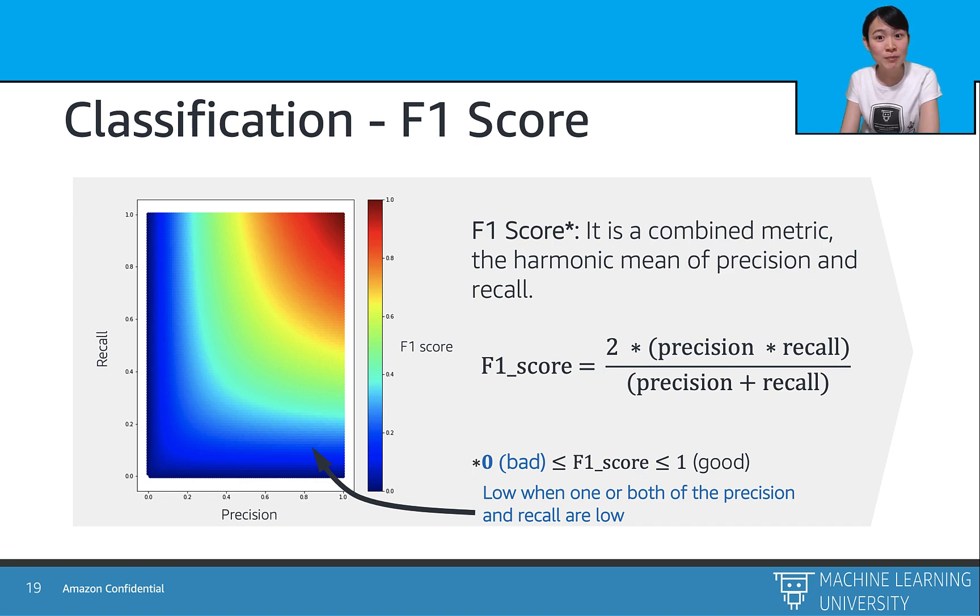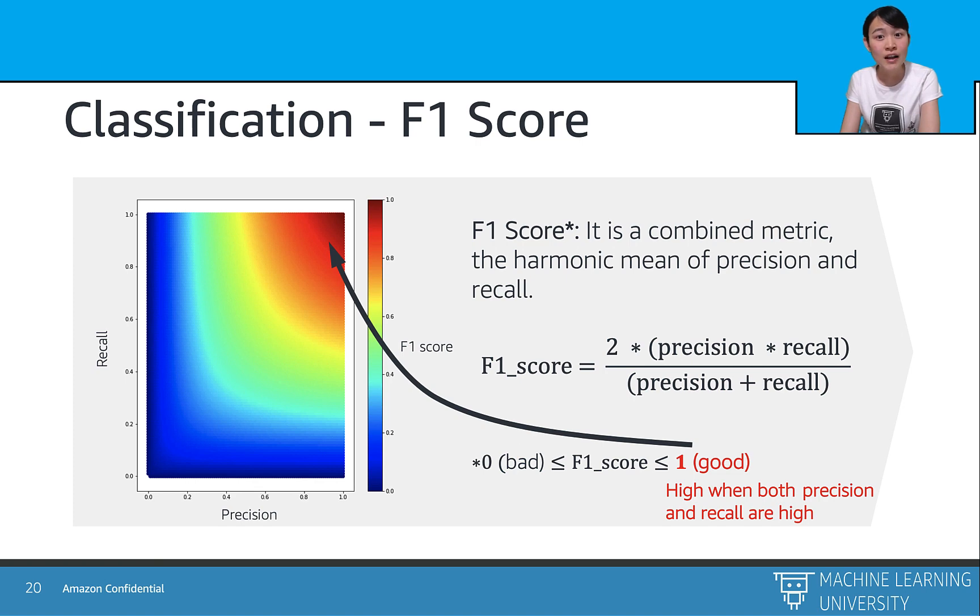If we draw it to a 2D plot, with precision versus recall, the blue region plotted here means one of the precision or recall, or both of them are low, which is not an ideal model. However, if the F1 score is closer to one, which means both precision and recall are close to one, this will be the ideal model performance.